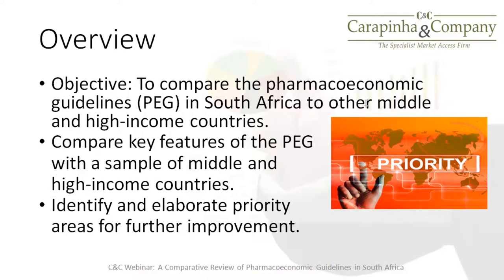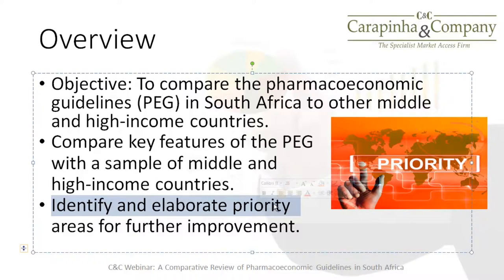We thought it would be a good idea to expand this comparative review beyond just Egypt and Portugal to a more systematic and methodical comparison of South Africa's guidelines with other countries. We chose a group of middle-income countries and a random sample of high-income countries, comparing key features of these guidelines to identify areas of commonality, but more importantly, differences, and to elaborate priority areas for further development.